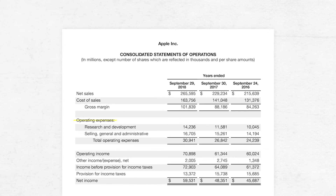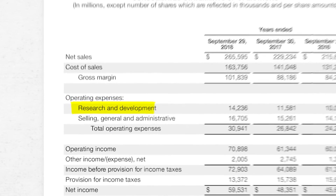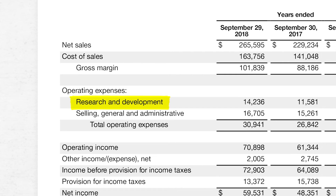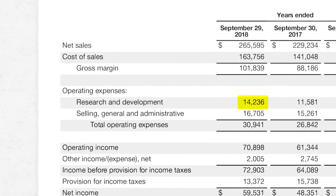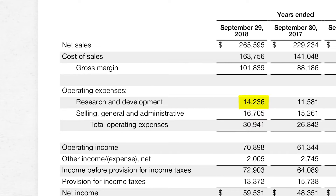Some companies put all Operating Expenses into one line item, but because Apple has a lot of research and development, they choose to itemize and break out that line separately — sometimes abbreviated as R&D. Research and development for Apple in 2018 was $14,236,000,000. This includes all costs for designing and improving existing products or inventing new products, and all these costs are completely independent of how much product is sold. So salaries of employees working on new products is an example of a research and development expense.